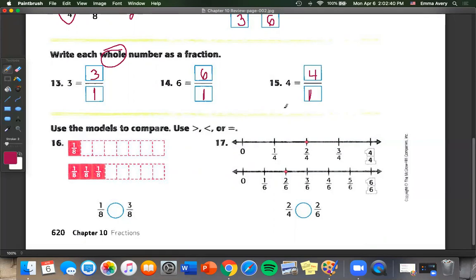Number 16, use the models to compare. Use greater than, less than, or equal to. So we have one eighth and three eighths. Well, three eighths is a whole lot bigger than one eighth. So we're going to use the less than. And number 17, you can draw a line down and see which one's bigger. Two fourths is bigger than two sixths. So we're going to use greater than.